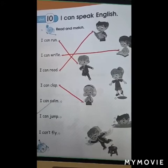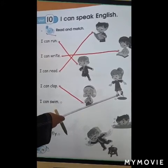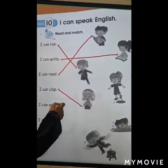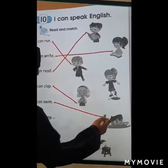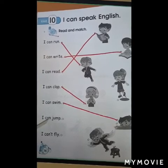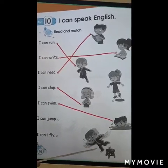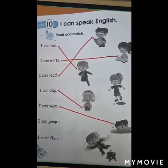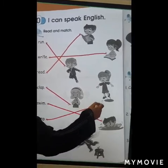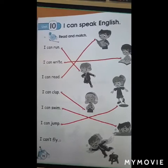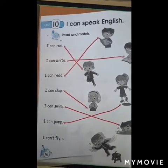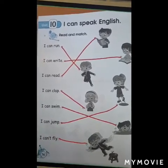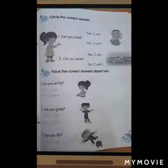I can swim. Is she swimming? No. Is he swimming? Yes. So we will match the sentences with the picture. I can jump. Is this boy jumping? No. Is she jumping? Yes. I can jump. I can't fly. This boy, he can't fly. He is trying to fly but he can't. Here is the correct answer.